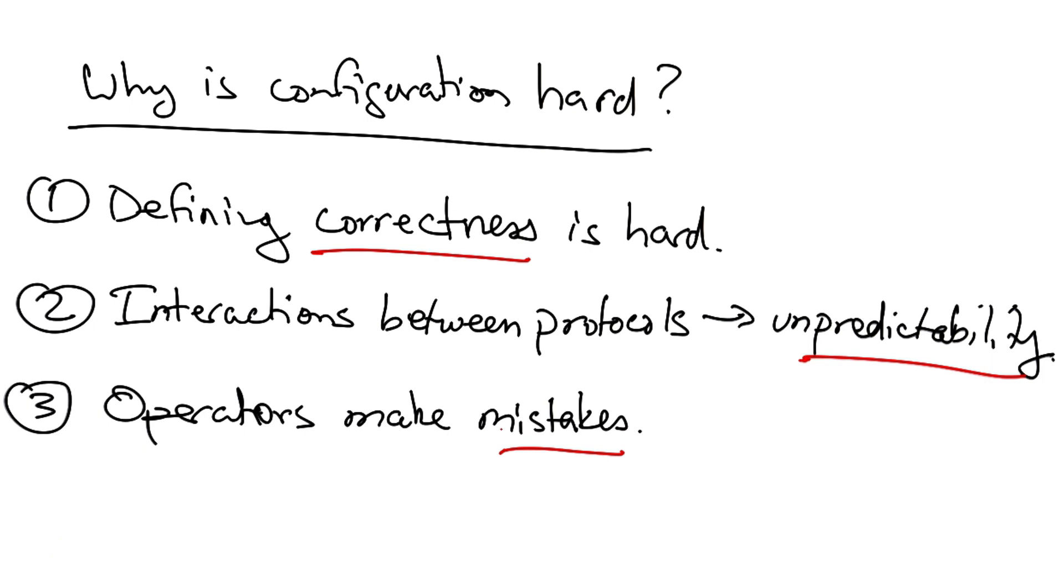Furthermore, network configuration has historically been distributed across hundreds or more network devices across the network, where each device is configured with vendor-specific low-level configuration.